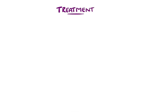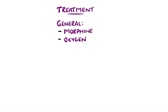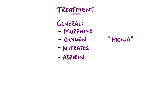General management involves analgesia, which is often morphine. Oxygen therapy is required to maintain saturations above 94%, provided there is not another appropriate range such as in chronic obstructive pulmonary disease. The use of nitrates, most commonly glyceryl trinitrate sublingually or via intravenous infusion. Aspirin is also used in most cases. This is remembered with the mnemonic MONA. Antiemetics such as metoclopramide may also be added.